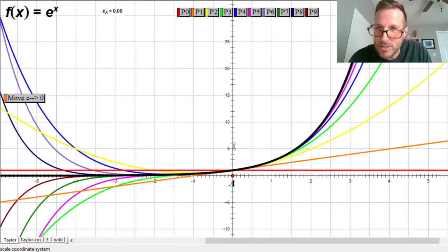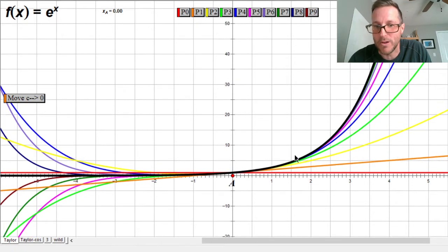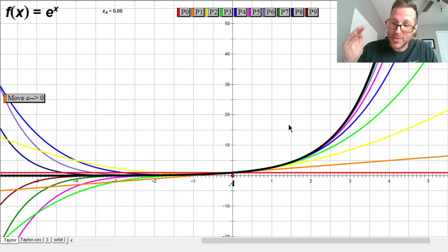Look how closely those polynomials follow the curvature of e to the x. We're talking about first, second, third, all the way to the ninth derivative of these polynomial functions, which is exactly the same as what's happening at e to the x. How many places do these ninth degree functions exactly get you e to the x? Just one, just the point of tangency at zero, one.